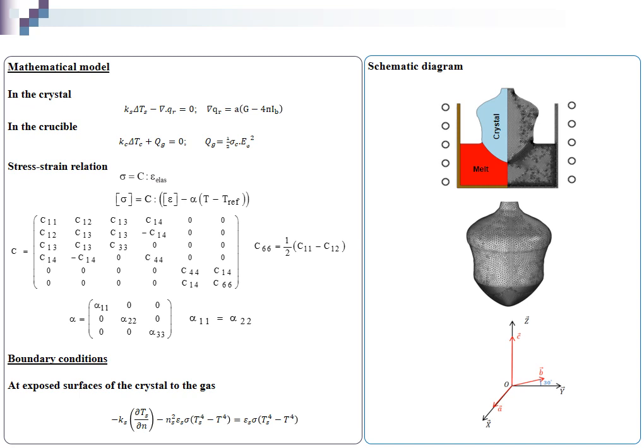For the mathematical model, we give the equation of conservation of energy in the crystal with P1 approximation, where the effect of internal radiation is added in the conservation equation of energy as the divergence of heat flux.